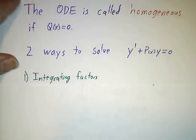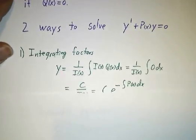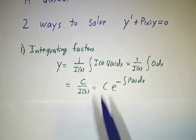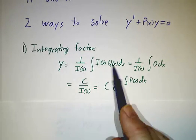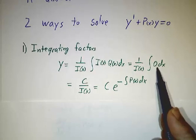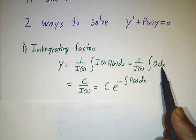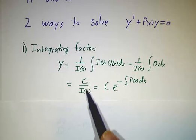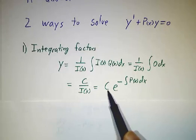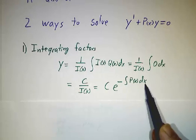One way we just found. Use integrating factors. Our formula says y is 1 over the integrating factor times the integral of i dx. But q is 0. And what's the integral of 0 dx? A constant. So our answer is a constant over i or a constant e to the minus integral of p dx.